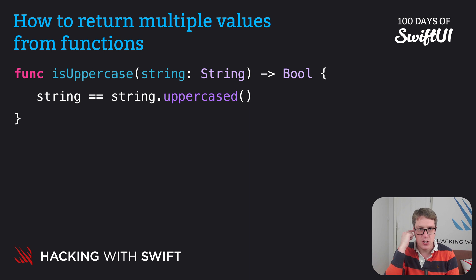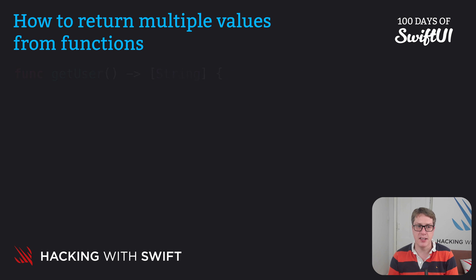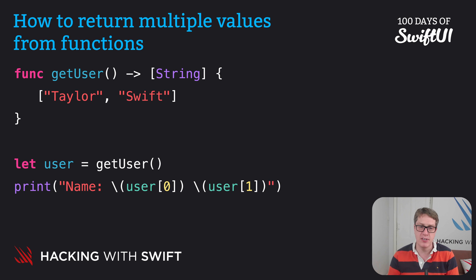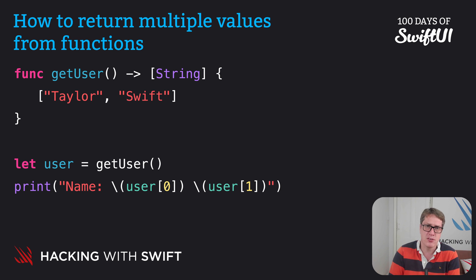If you want to return two or more values from a function, you could use an array. For example, we could write a function like func getUser returns array of string, and inside it returns Taylor and Swift. We can call that by printing out user zero and user one. This works, but it's problematic because it's hard to remember what zero and one actually meant. If we ever adjust it, zero and one could be something else entirely or not even exist at all.